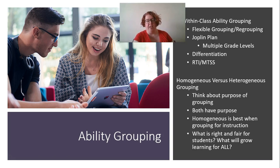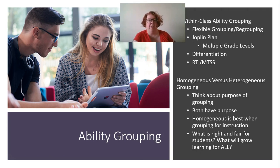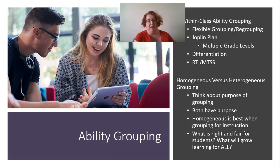Homogeneous grouping means putting kids of like ability together, while heterogeneous grouping means putting kids of different abilities together — grouping by interest, or purposely mixing a high student with a low student. When you're grouping kids, you always want to have a purpose. The book is very against homogeneous grouping, but I disagree. Research supports homogeneous grouping as the most effective approach when delivering instruction. If I need kids to read together, it makes sense to group those reading at the same level so they can read the same book.